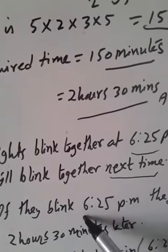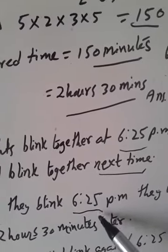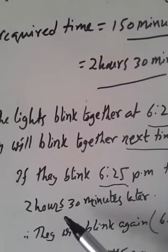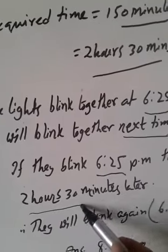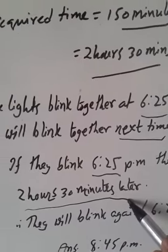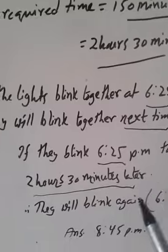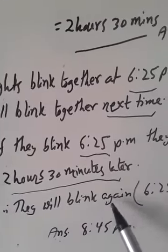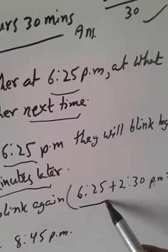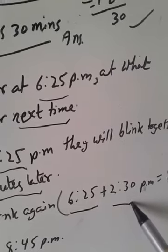If they blink at 6:25 pm, it will blink 2 hours 30 minutes later. We got it in A. So, one is 6:25 pm, plus 2 hours 30 minutes,